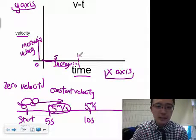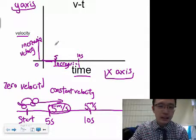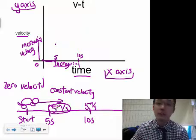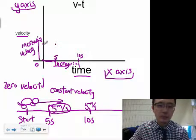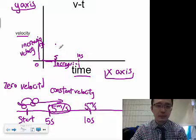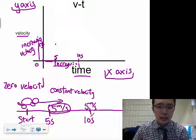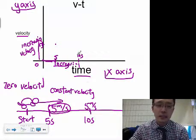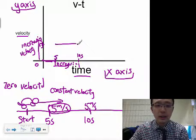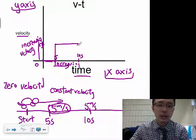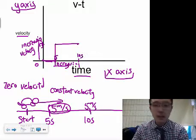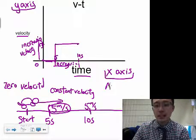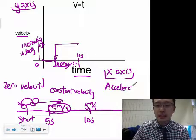At five seconds my velocity is five meters per second, and at ten seconds my velocity is still five meters per second — it hasn't changed. That's why when you're at constant velocity in the VT graph, it is a flat line.